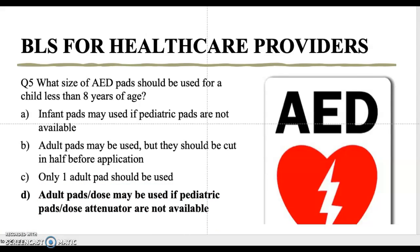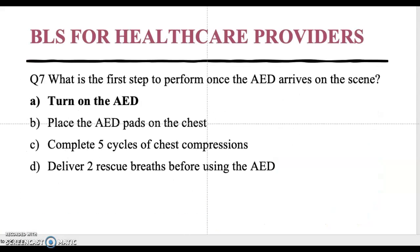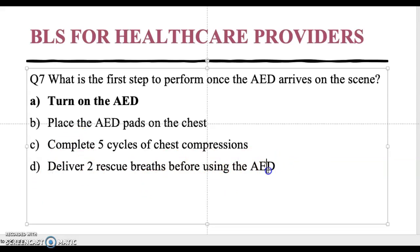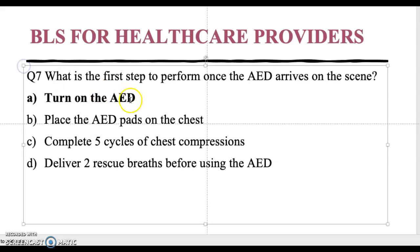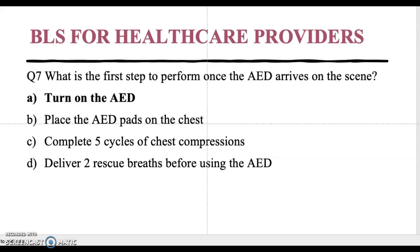Question seven: what is the first step to perform once the AED arrives on the scene? A — turn on the AED; B — place the AED pads on the chest; C — complete five cycles of chest compressions; D — deliver two rescue breaths before using the AED. When the AED arrives, the first thing you do is turn it on — the prompts will guide you through the next steps. A is the correct answer.